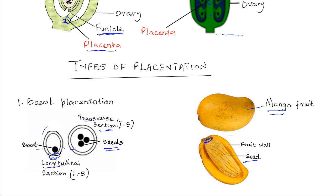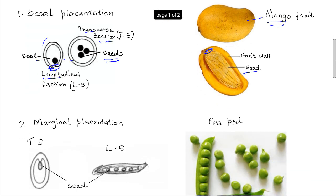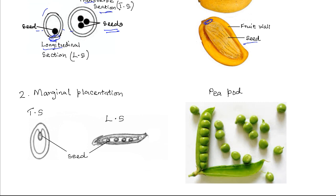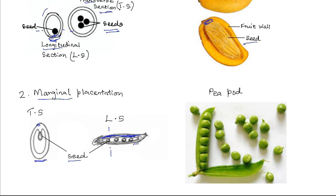A second type of placentation is known as marginal placentation. As the term marginal suggests, the seed or ovule is attached to the margins — that is, the placenta is located along the margins of the ovary or fruit wall. In transverse section you can see the placenta along the sides. In longitudinal section, the seeds are arranged in more or less a straight line, since the placenta is along the margin of the fruit wall. A good example is a peapod.